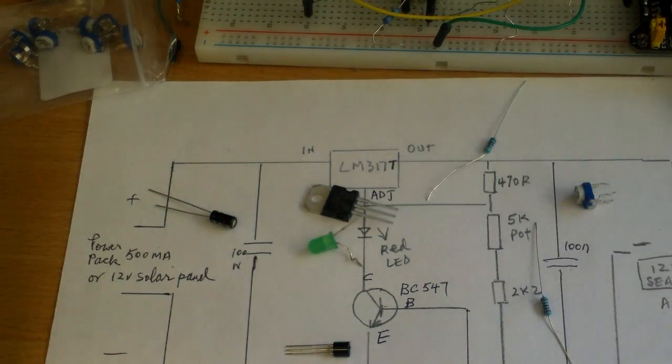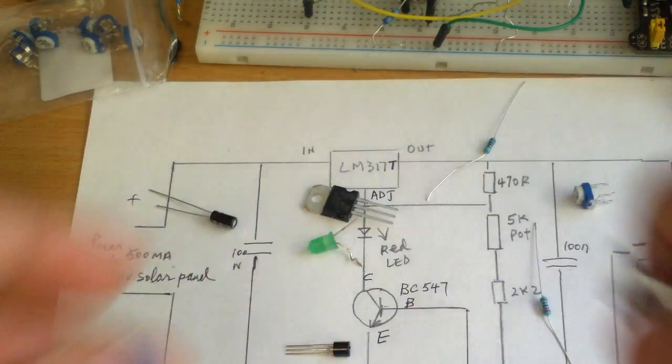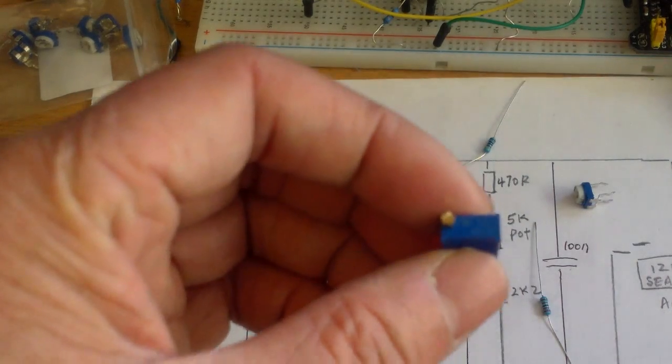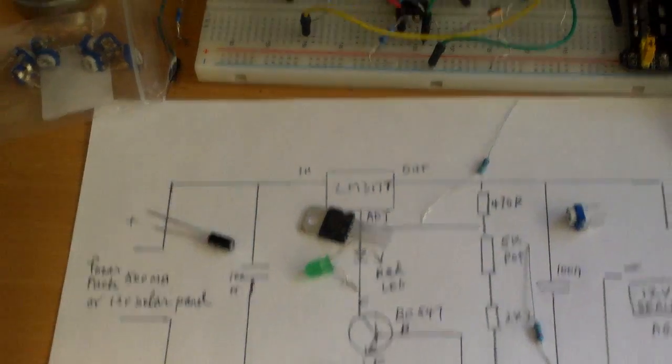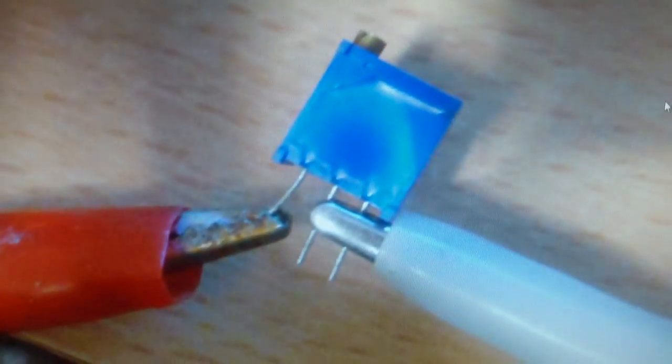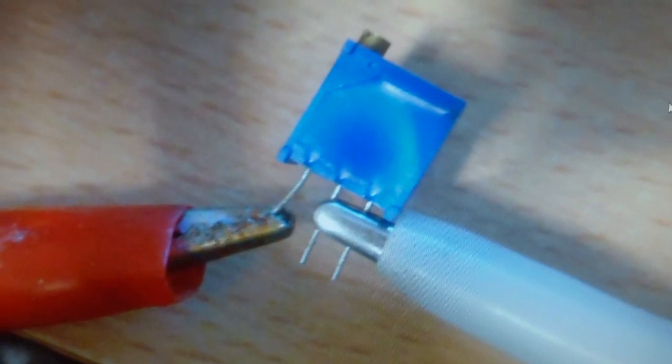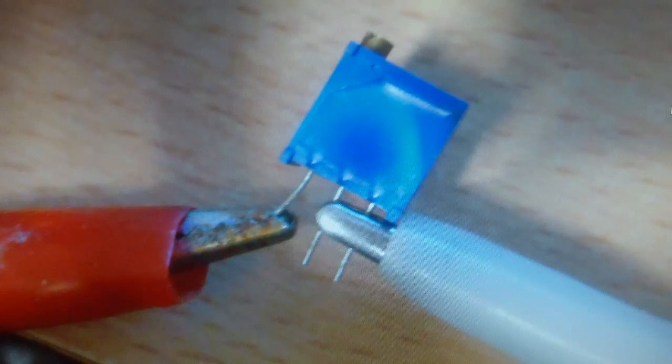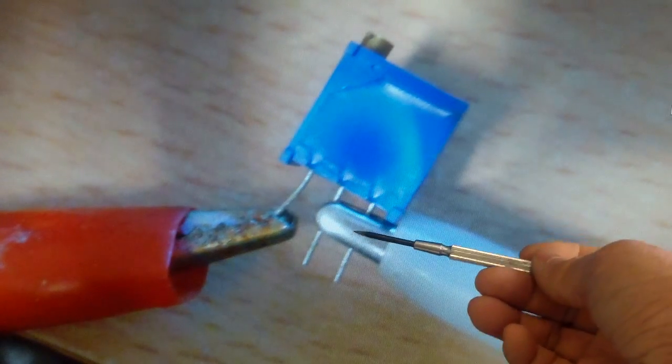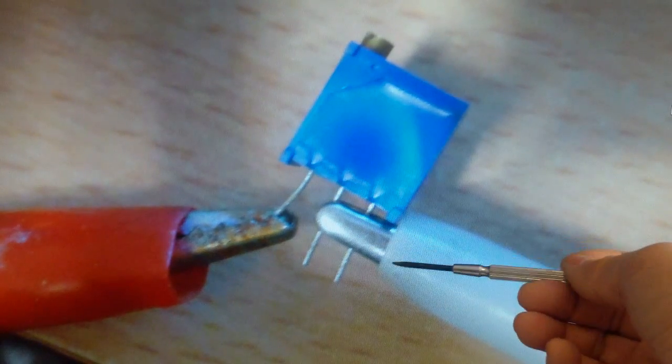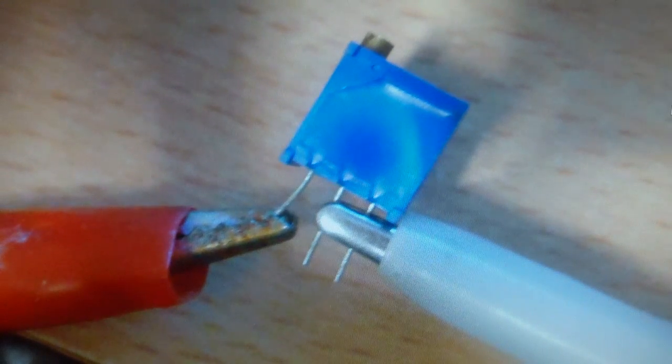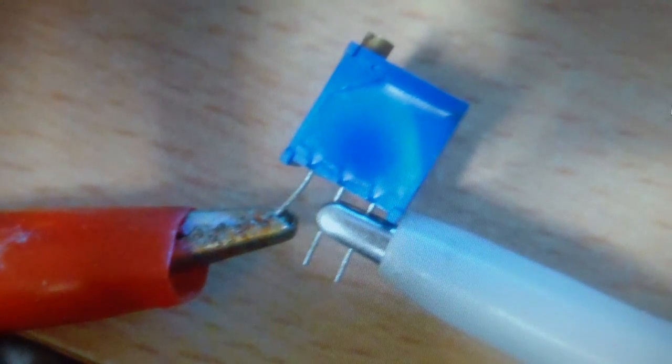And basically it's the same thing here with this trim pot. I took a picture to remind myself how this is connected. Right, you connect 2 of them together. Then when you turn this, the resistance changes.